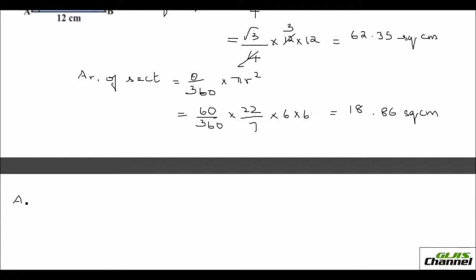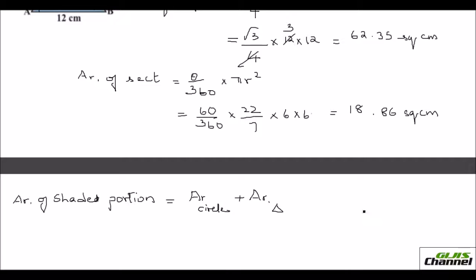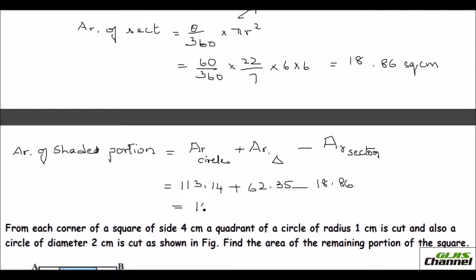There is no rigid formula here — you just look at the diagram. The area of the shaded portion equals area of circle plus area of equilateral triangle minus area of sector: 113.14 + 62.35 − 18.86 = 156.63 square centimeters.